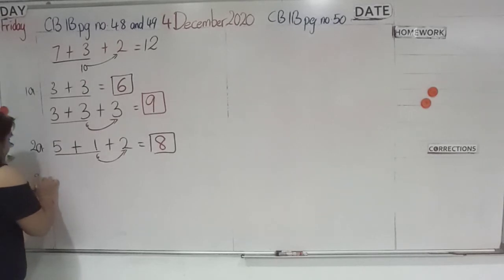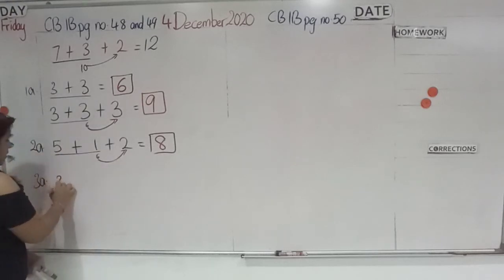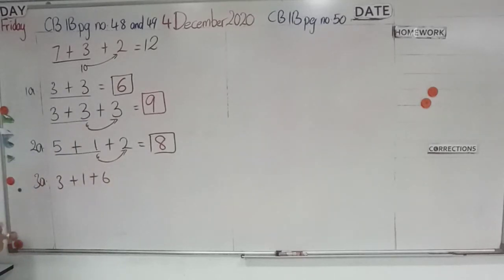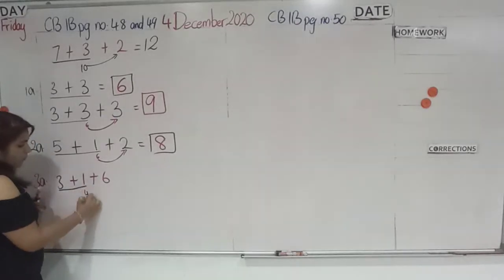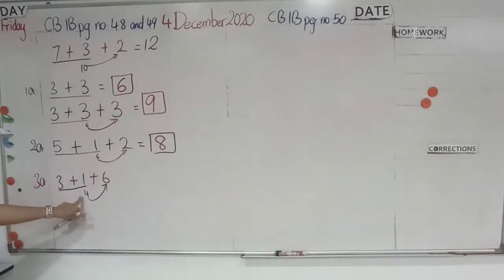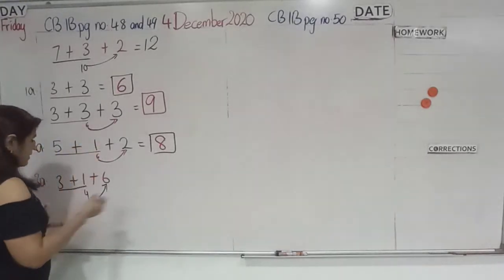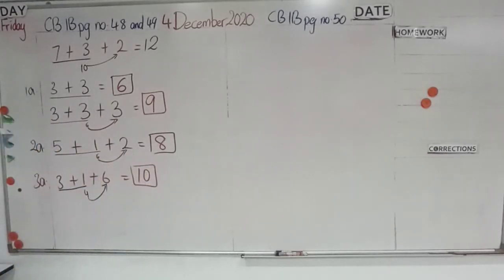Now, number 3, first row, you have 3 flower clocks, plus 1 fish clock, plus 6 circle clocks. Here, you have to underline, 3 plus 1, that is 4, 4 pointing to 6. Why? Because now you are dealing with 4 plus 6. 6 in your brain, 4 on your fingers, after 6, 7, 8, 9, 10. So, the answer is, 10.